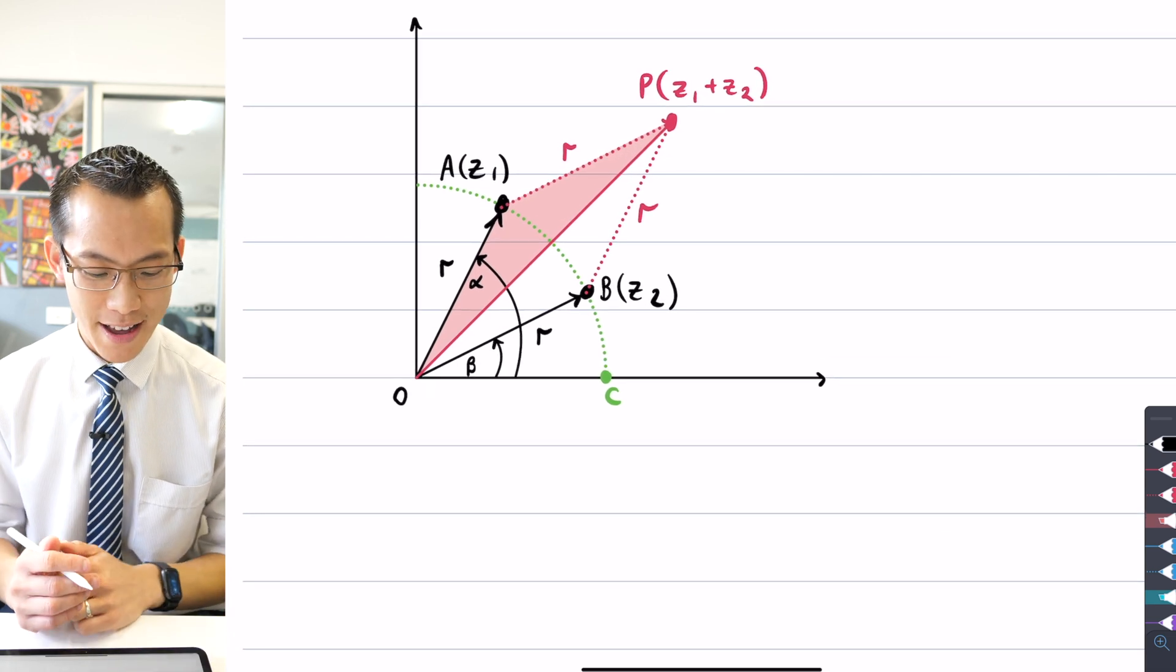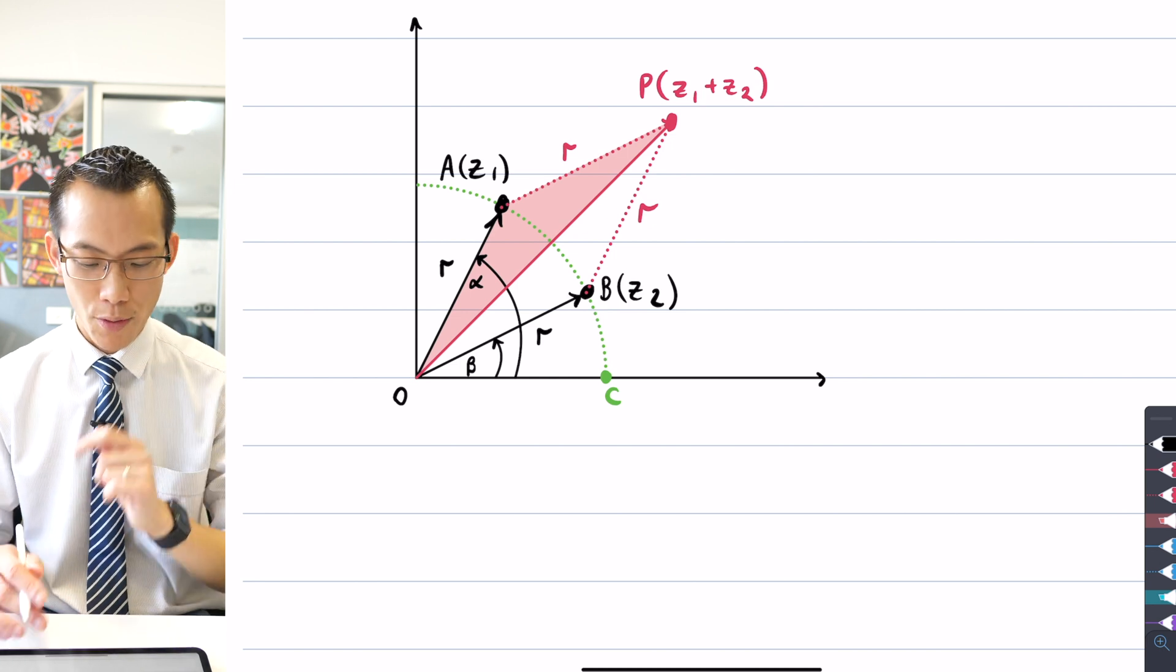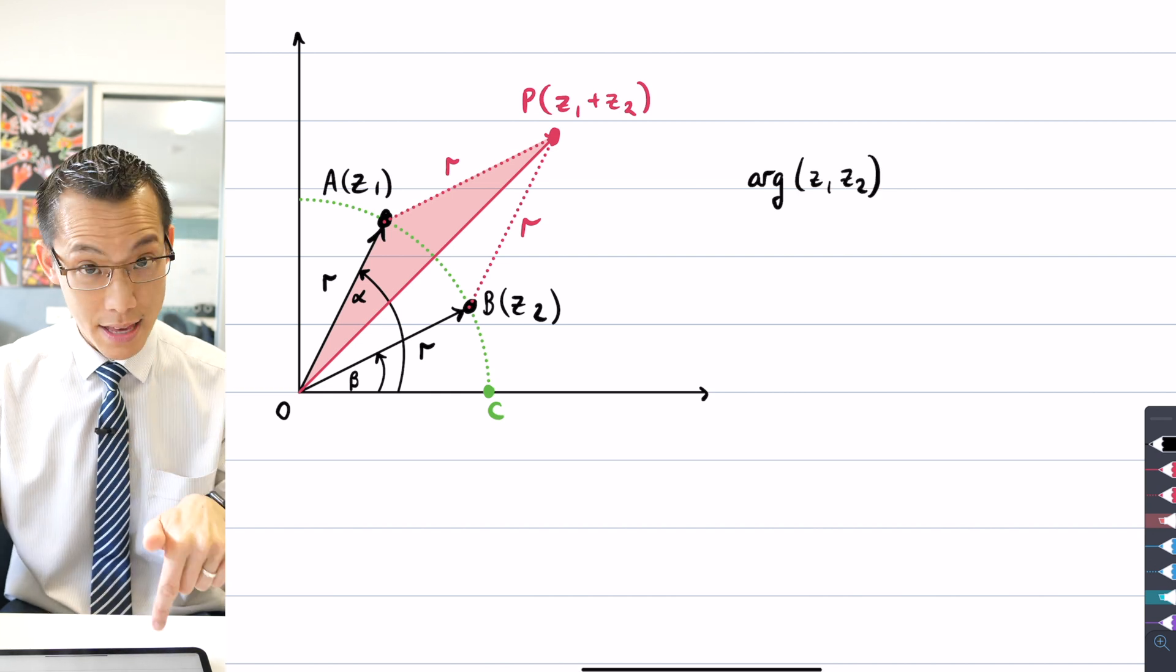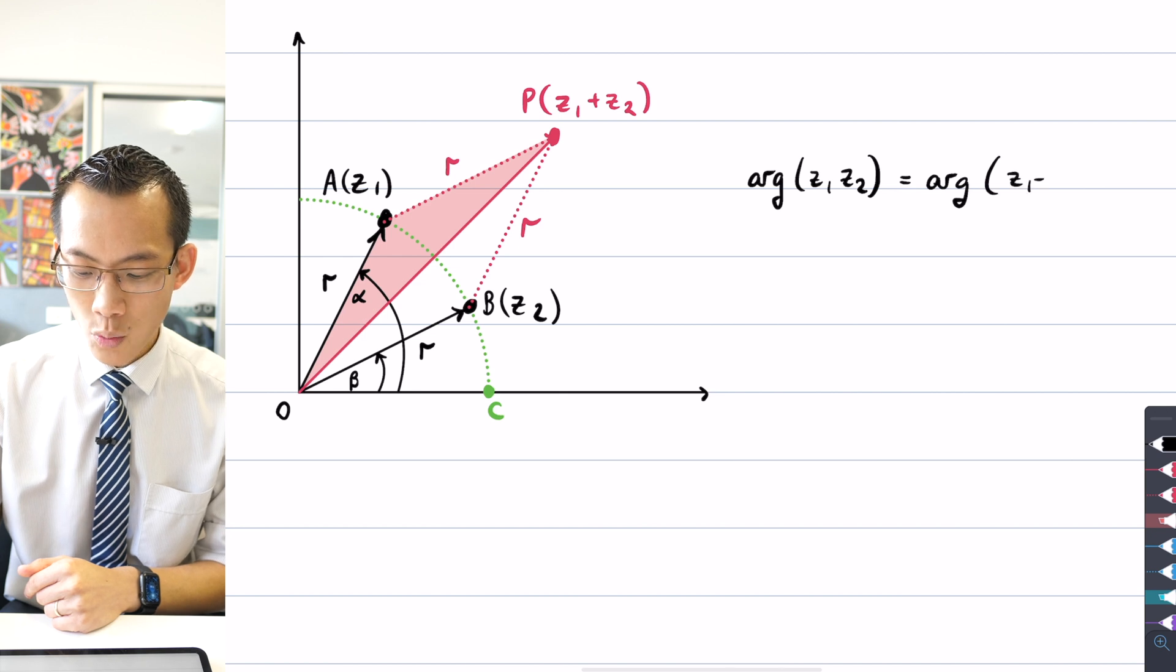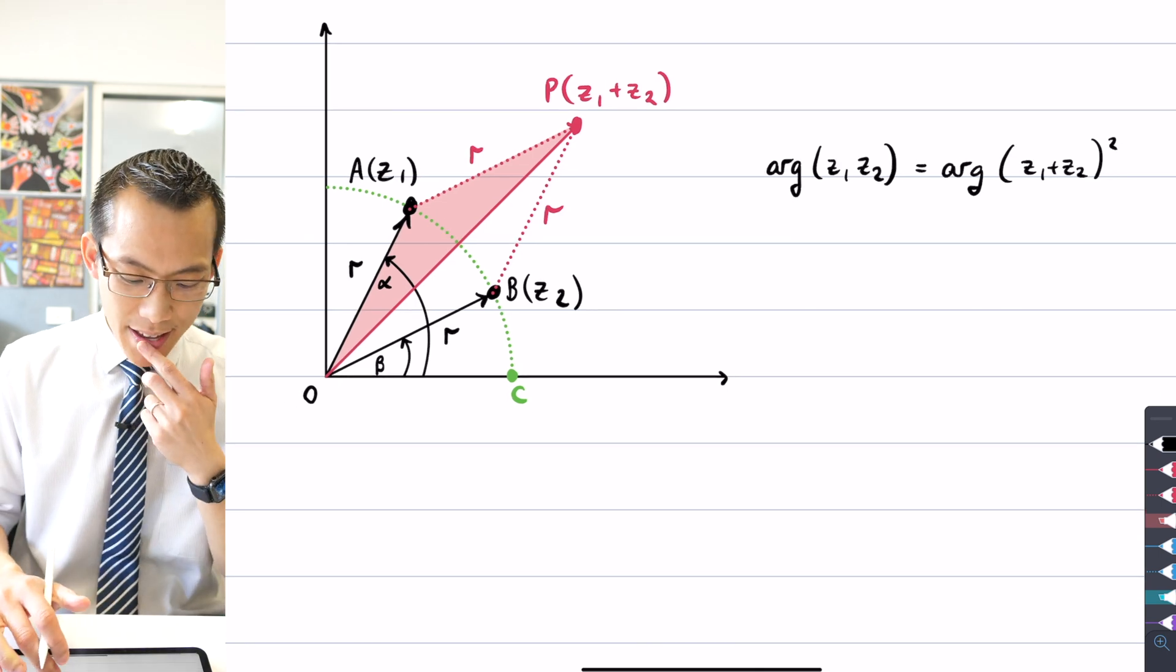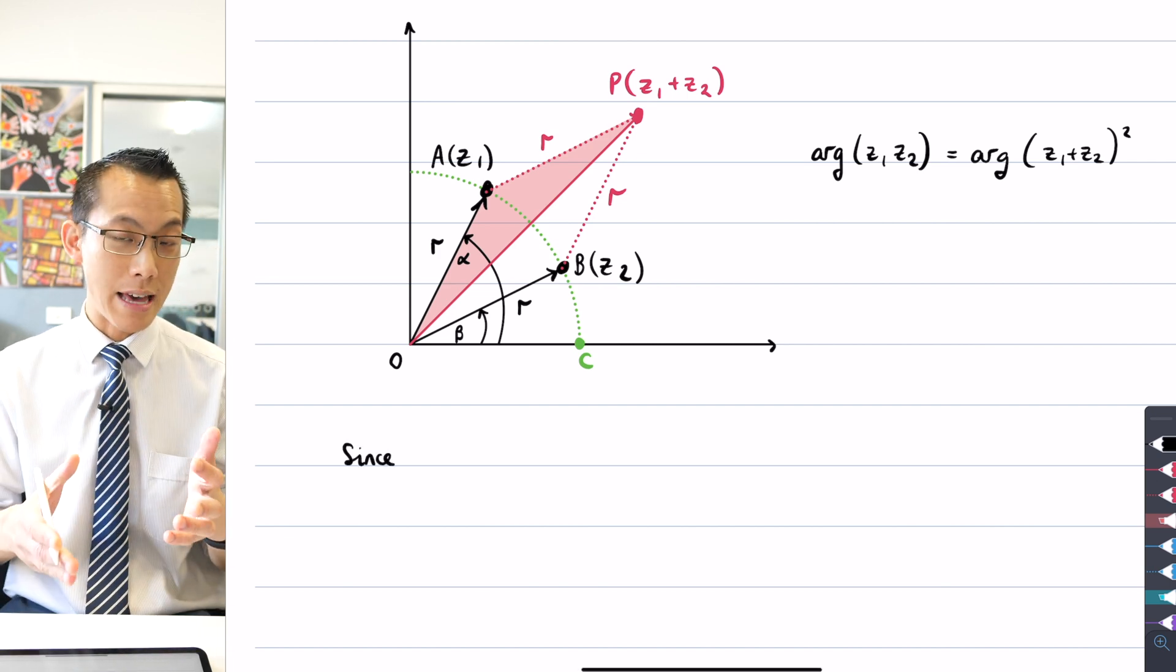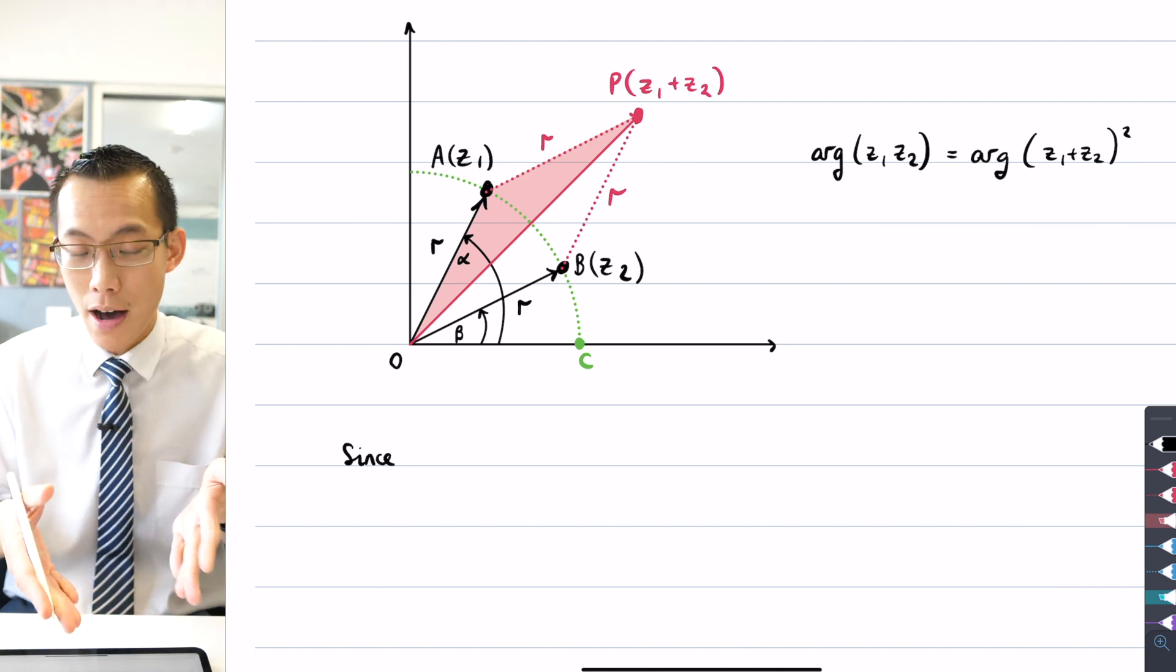So I've got all my pieces in place now. I'm going to start to unpack how I prove the result up the top. Remember where we're going - the argument of z1 times z2 equals the argument of z1 plus z2 squared. Let's try and do this. I should actually write some of that logic that I was saying out loud before.